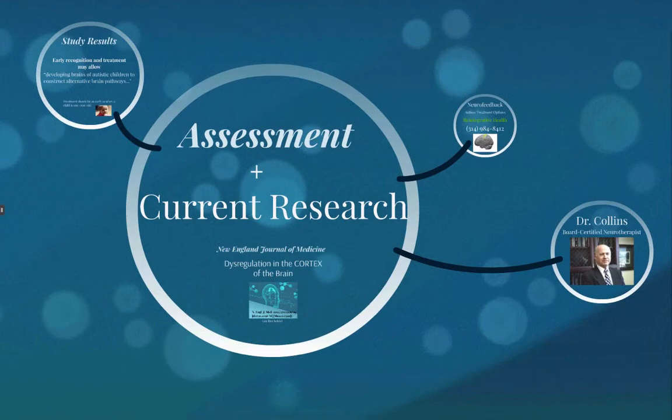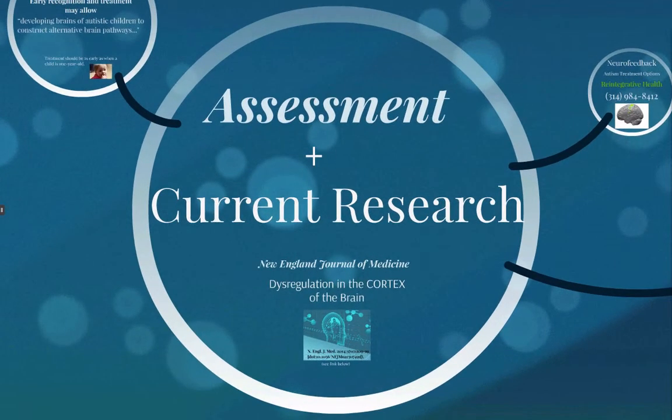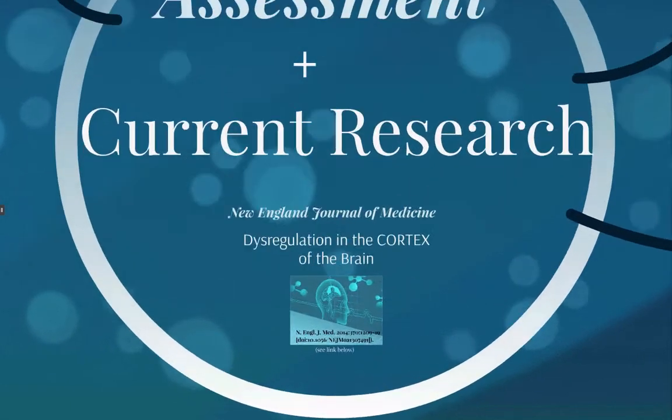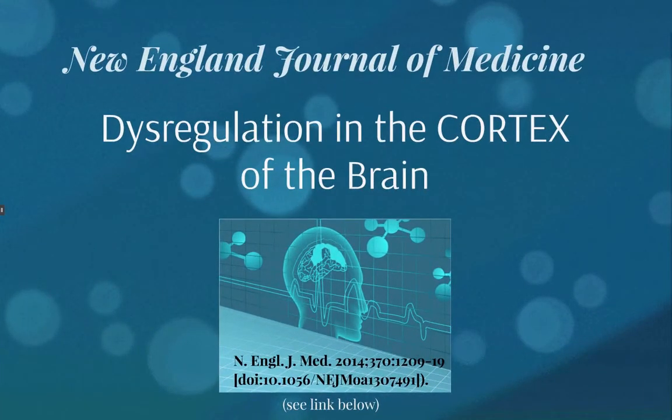Understanding the results of this sophisticated assessment and autism test needs to be merged with what we are learning in current research. An example of this is the findings published in the New England Journal of Medicine that there is a dysregulation in the developing layers of the outer part of the brain called the cortex. This disrupts the processing of specific information that leads to the complications seen in the autistic child.